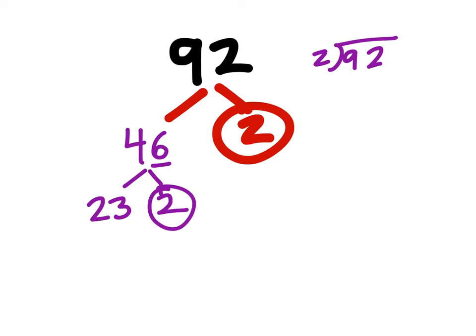Now 23 is an unusual number to see for finding factor trees or prime factorization because it's not a multiple of 2, 3, 4, 5, 6, 7, 8, 9, 10, 11 or even 12.